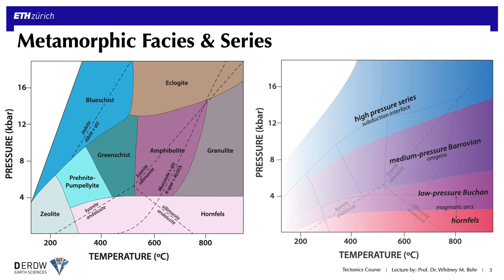Pressure-temperature paths that show relatively high P-to-T ratios are referred to as the high-pressure series, and they pretty much always signify a cold environment characteristic of subduction. Metamorphic complexes that show more intermediate temperature-to-pressure ratios are referred to as the Barrovian series. These are typical of orogenic belts, where subduction has transitioned to continental collision and orogenic wedge development that generates a significant amount of radiogenic heat during tectonism — the Alps being a good example.